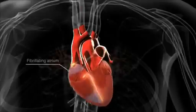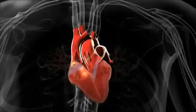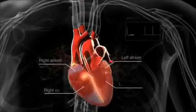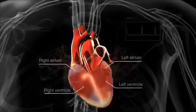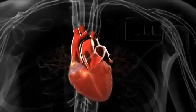This can cause the walls of the atria to fibrillate or quiver rapidly, rather than contracting normally. Electrical signals are transmitted irregularly from the atria to the ventricles, which both fail to contract in a synchronized way.